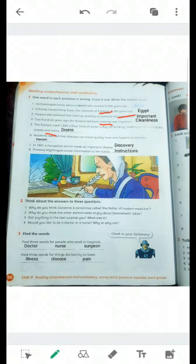Avicenna realized that diseases can travel quickly from one hospital to another. Of course, the wrong word is hospital. It's person, from one person to another.